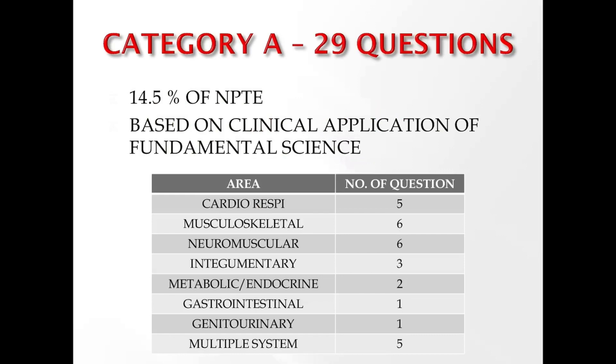In Category A: cardio gets 5 questions, musculoskeletal 6, neuromuscular 6, integumentary 3, metabolic 2, gastrointestinal 1, genitourinary 1, and multiple system involvement 5 — totaling 29 questions. This category covers anatomy and physiology of body systems, pharmacology related to specific systems, effects of activity and exercise, physiological response to environmental factors, aquatic therapy, and motor learning and control.